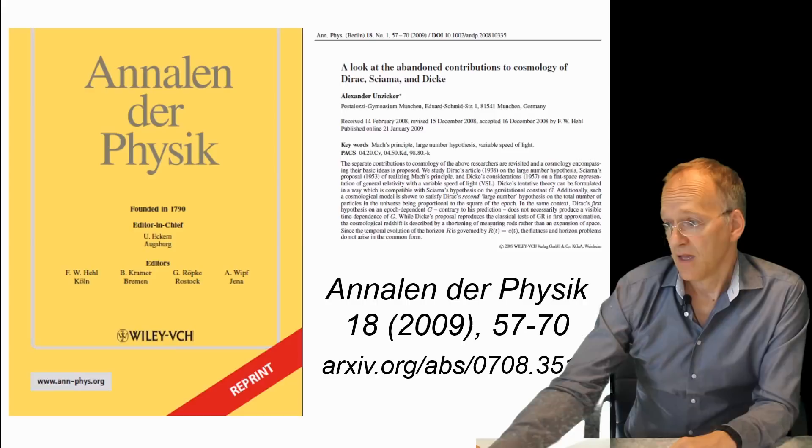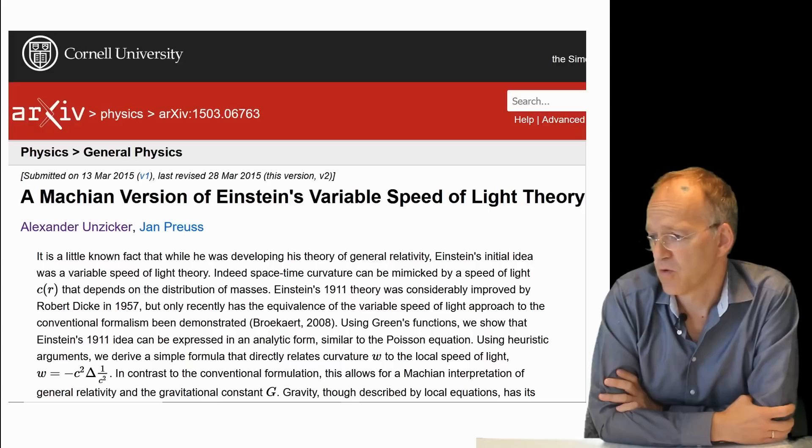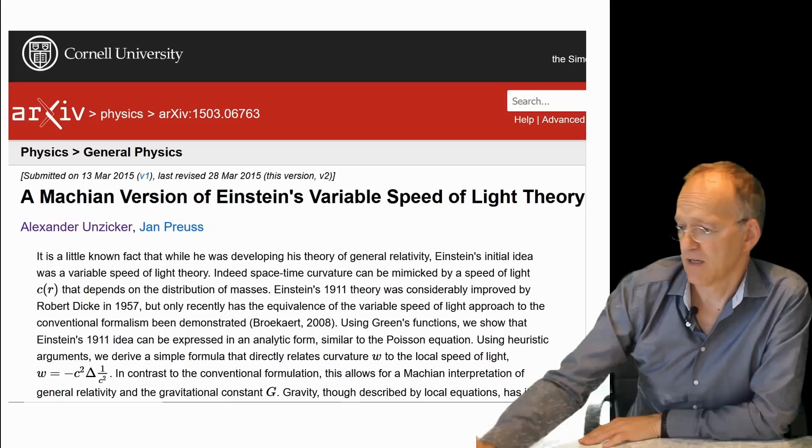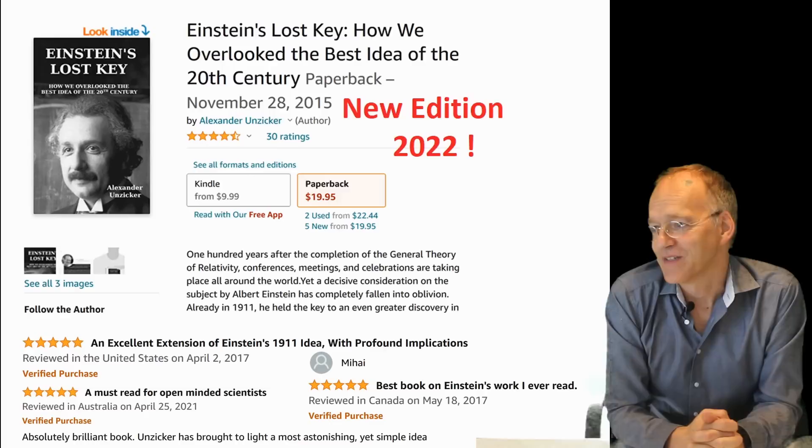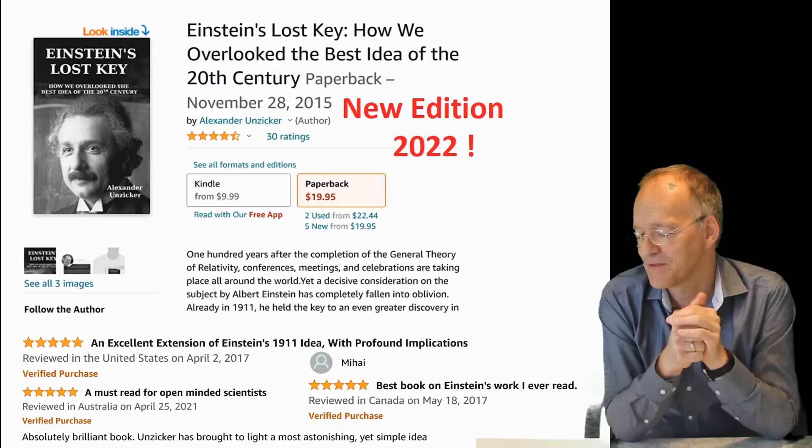If you want to go into more detail, this is my paper on arXiv, and this is a paper with my co-worker Jan Preuss about a Machian version of Einstein's variable speed of light theory. We derived that formula there. Of course, there is my book, 'Einstein's Lost Key: How We Overlooked the Best Idea of the 20th Century.' Have a look at the new edition 2020. If you like the video, don't forget to give it a thumbs up. If you enjoy fundamental physics, subscribe to this channel.